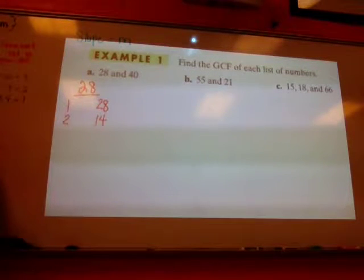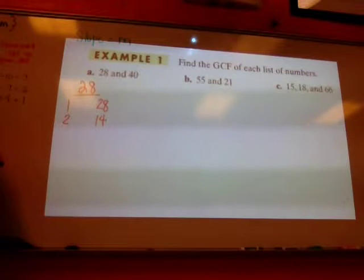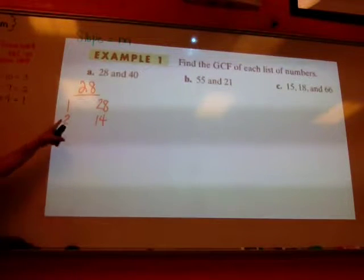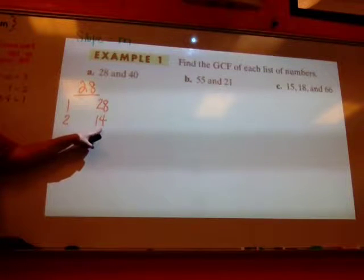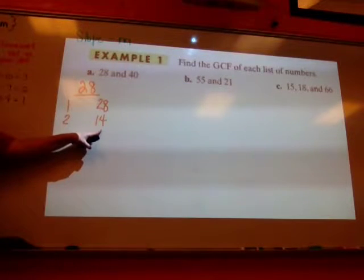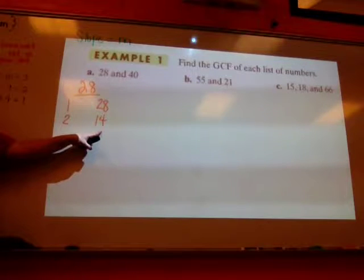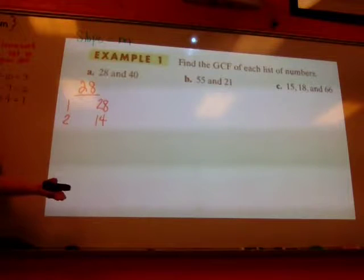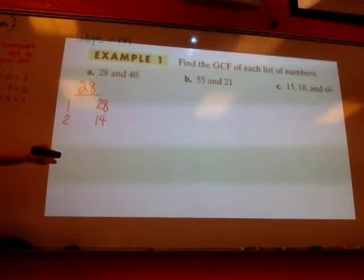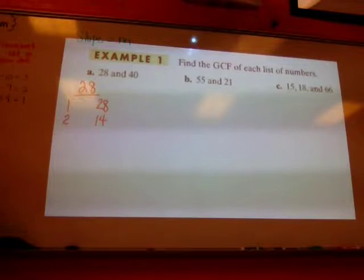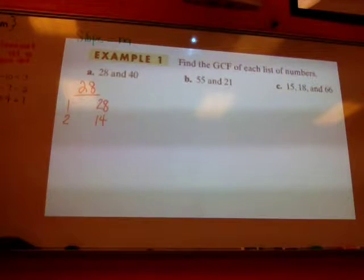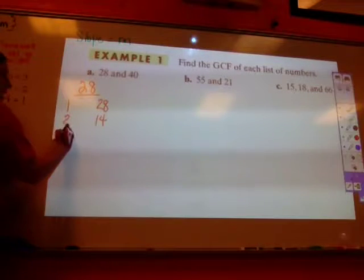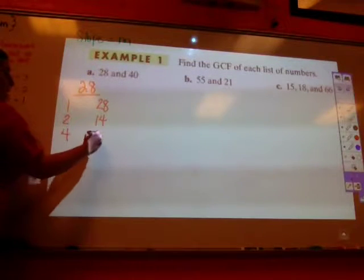So not divisible by 3. What about 4? Is 28 divisible by 4? Yes, do you know how you know that without knowing your multiples of 4? If it's divisible by 2 and gives you an even number, then it's going to also be divisible by 4. But like 30. 30 is divisible by 2, but it's 2 and 15. 15 is not even, so 30 is not divisible by 4. I know all kinds of cool tricks. So 4 and what? 7.